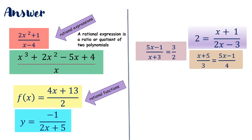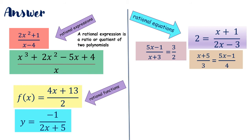We have the third group — these three items are rational equations. You have here an equality sign. If you try to differentiate between rational function and rational equations, both have equality signs. However, for a rational equation, we have two sides of rational expressions. So, you have here 2 is equal to x plus 1 all over 2x minus 3.